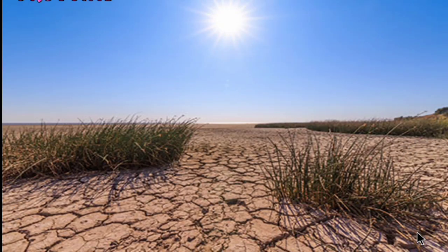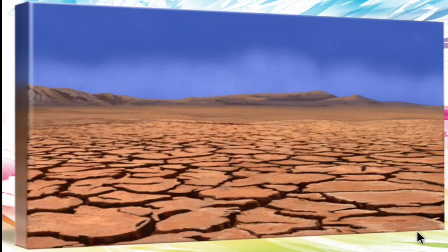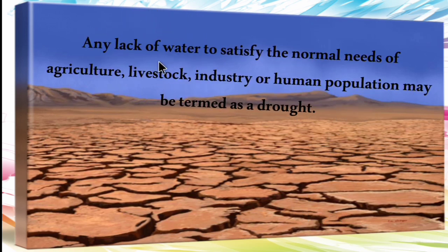The fourth major hazard in India is drought. Any lack of water to satisfy the normal needs of agriculture, livestock, industry or human population may be termed as drought. Drought can be categorized as meteorological drought — a situation where there is a reduction in rainfall for a specific period below a specific level.